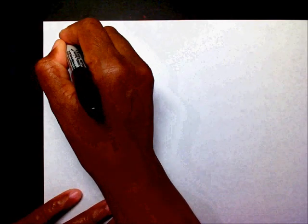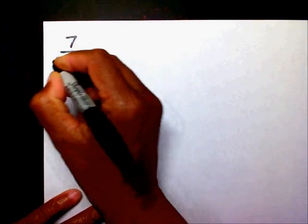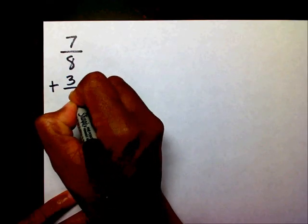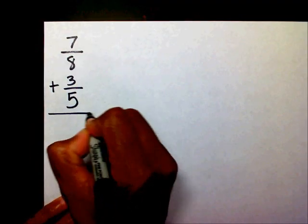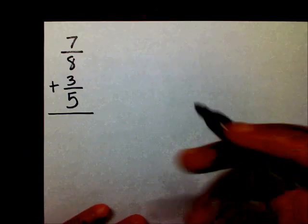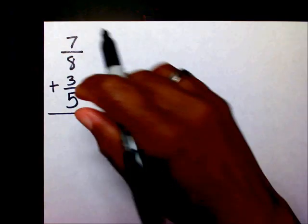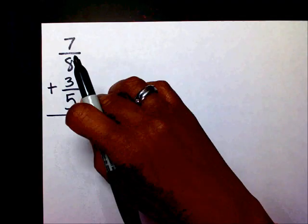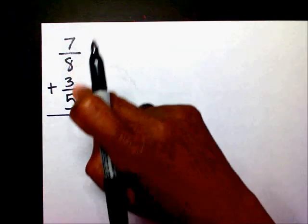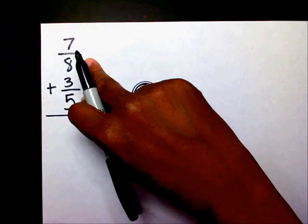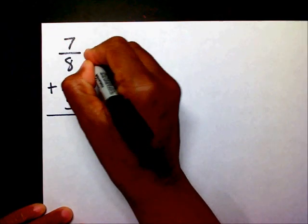I have seven-eighths plus three-fifths. Whenever you add or subtract fractions, you have to have the same denominator. Eight is one denominator and five is the other denominator. They're not the same, so I need to get a common denominator.